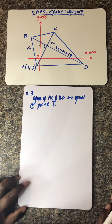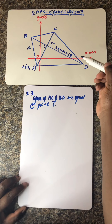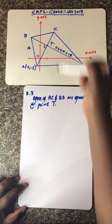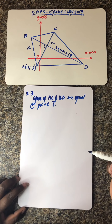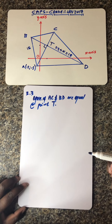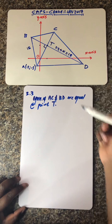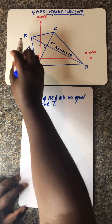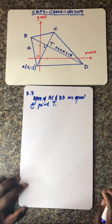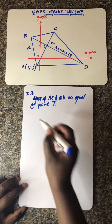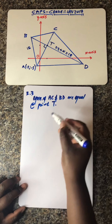In short, what you do is equate the equation of AC — which is y = 2x − 1 — to the equation of BD and solve for the unknown.